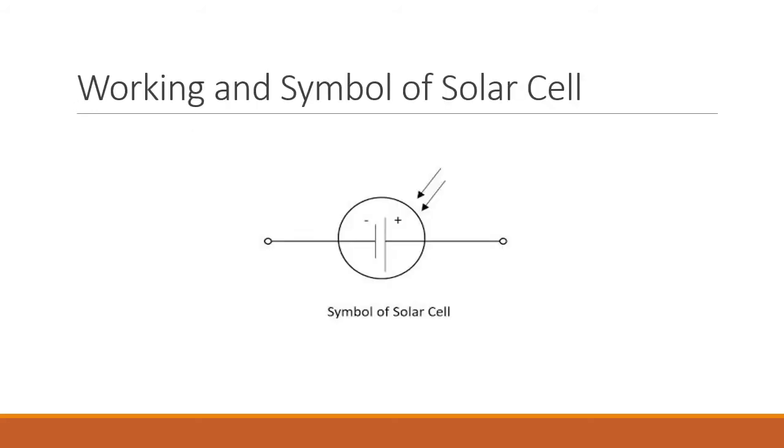This is the symbol of solar cell as it is capturing the light. That is why the arrows are in the inward direction and this is nothing but the anode and cathode. Anode is the positive terminal and cathode is the negative terminal.